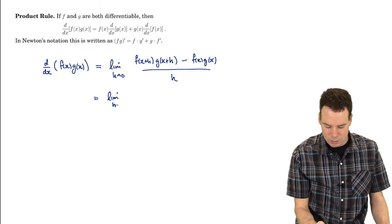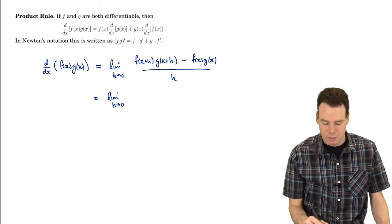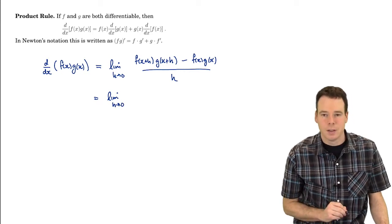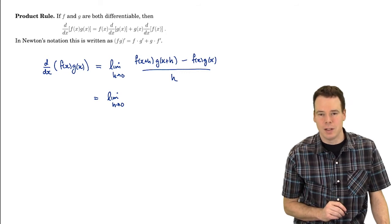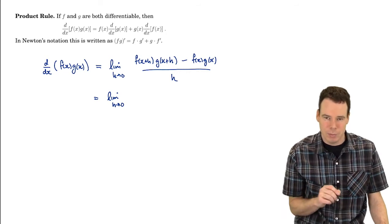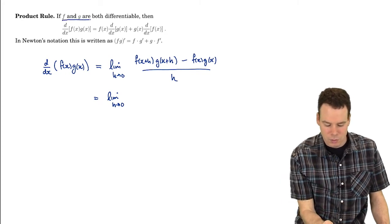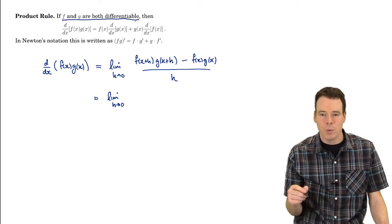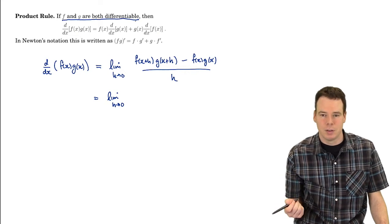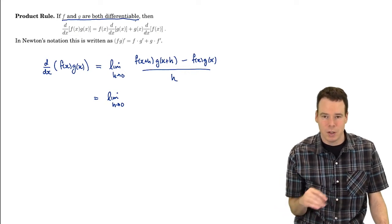Now what I'm going to do here is a little fancy trick. I'm going to add zero in a fancy way. How am I going to do this and why? Well one of the issues is I need to know how to use this fact: both f and g are differentiable. I'm going to need to use that fact in my argument somewhere.